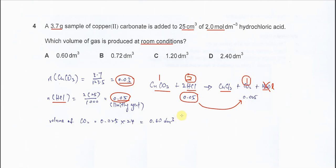So, therefore, we know that the mol of CO2 is 0.025, and the volume of CO2 is 0.025 times the molar volume, we get 0.6 dm³. So, answer is A. Okay, that's all. Thank you.